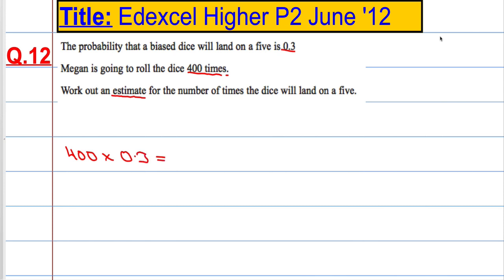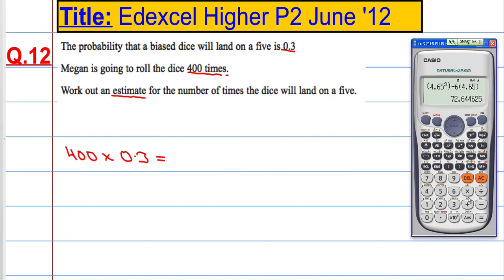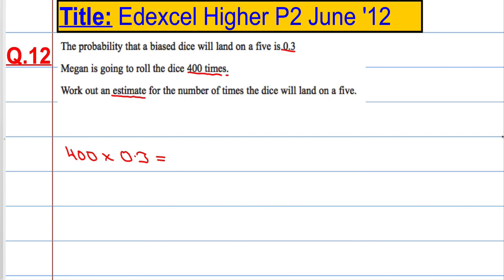So you do 400 times 0.3, which equals 120 times. And that's the question done.